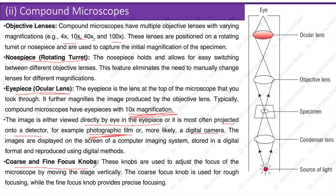Coarse and fine focus knobs adjust the focus by moving the stage vertically: the coarse focus knob is used for rough focusing, while the fine focus knob provides precise focusing. The light path goes from the light source through the diaphragm to the condenser lens, which condenses the light onto the specimen. From the specimen, light enters the objective lens, which magnifies the image, and from there passes to the eyepiece or ocular lens for further magnification before being viewed by the eye.